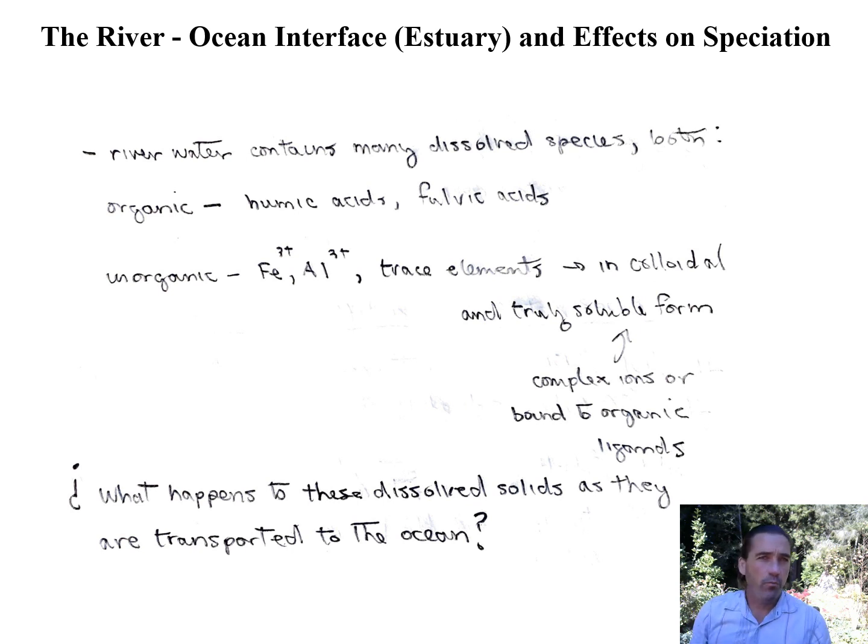Now what we want to do is take our weathered material from the continent that has been dissolved and transported by the river and take it through the estuary into the ocean. During this process we get a lot of changes in the chemical speciation of the elements. This process is involved in many of the elemental cycles that we have covered in this class.